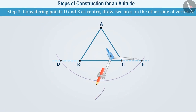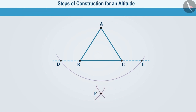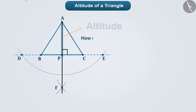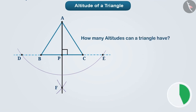Step three: without changing the radius in the compass, with points D and E as centers, we will draw two arcs cutting each other on the side opposite to vertex A. Suppose both arcs intersect at point F. Step four: now we will connect A to the point of intersection F. AF is perpendicular to BC. Suppose line segment AF intersects BC at point P. The line segment AP is the altitude from vertex A to opposite side BC.